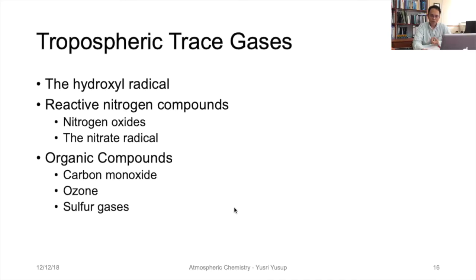Now we talk about the tropospheric trace gases. There are three main categories: the hydroxyl radical, the reactive nitrogen compounds — which can be grouped into nitrogen oxides and the nitrate radical — and the third type, which is the organic compounds.